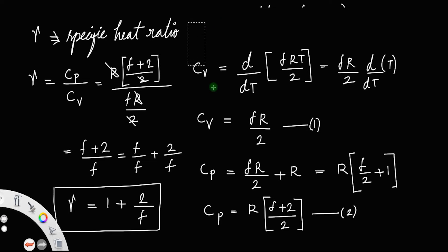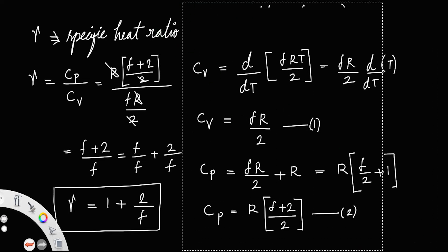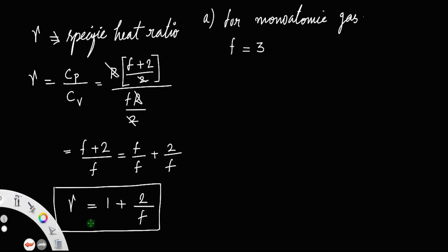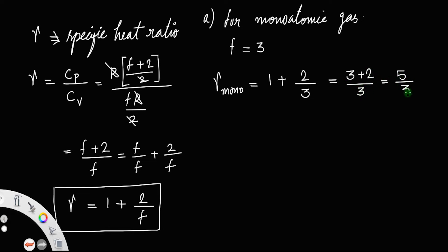Taking special cases: for a monoatomic gas, f = 3 (it has 3 degrees of freedom). Applying the formula, gamma_monoatomic = 1 + 2/3 = (3+2)/3 = 5/3. That is the specific heat ratio for a monoatomic gas.